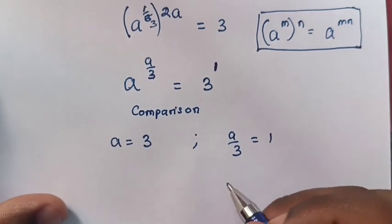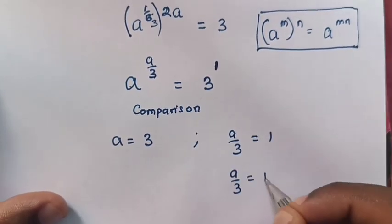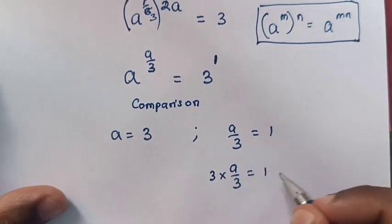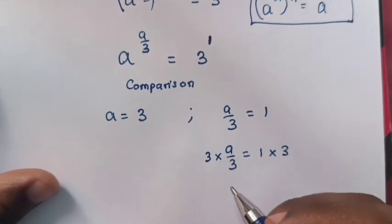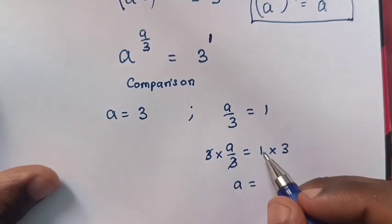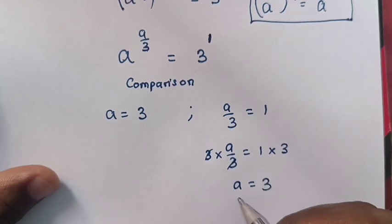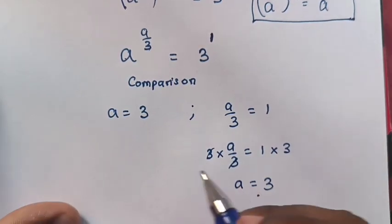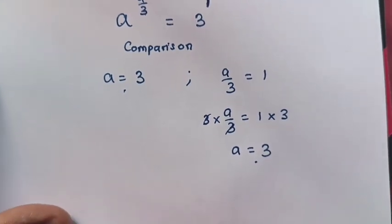So, a over 3 is equals to 1. We multiply by 3 on both sides to remove the fraction. So, this and this will cancel. So, a is equals to 3. A is equals to 3 here, which is the same as here. A is equals to 3.